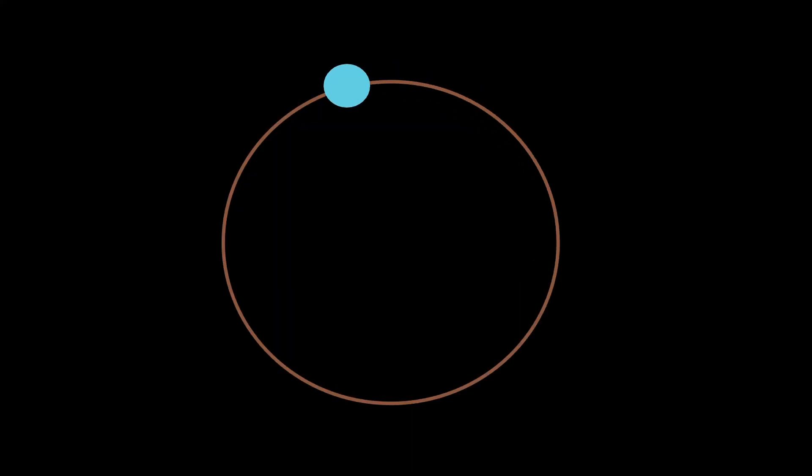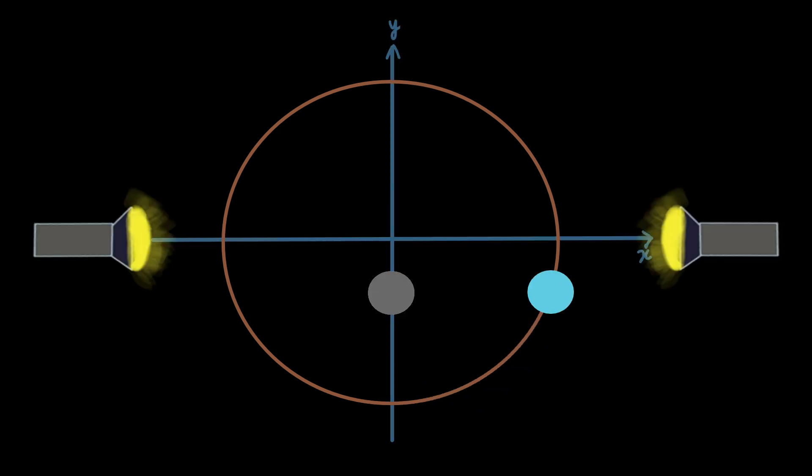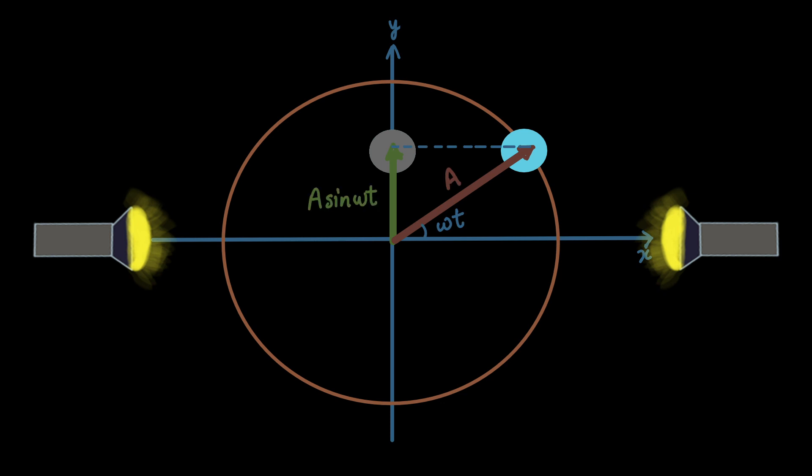This particle is moving on a circle with a constant angular velocity omega. If you put light here, the shadow of the particle is formed on y-axis. Then how to know the position vector of the shadow at any moment? Take a projection of vector of particle along y-axis at that moment. That is a sin omega t. This shadow is doing simple harmonic motion on y-axis because y is a sin omega t.